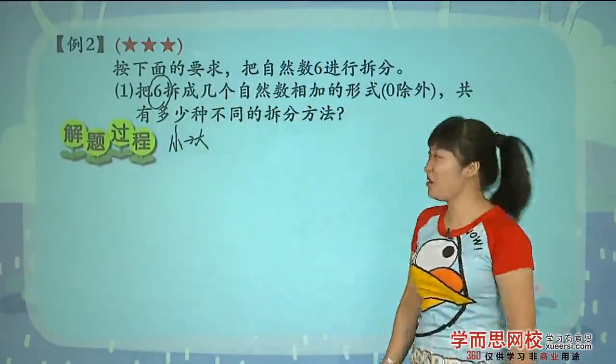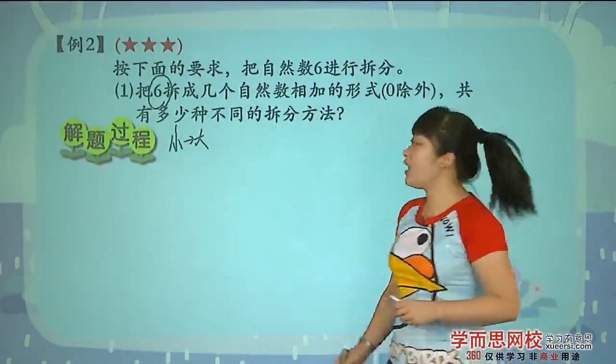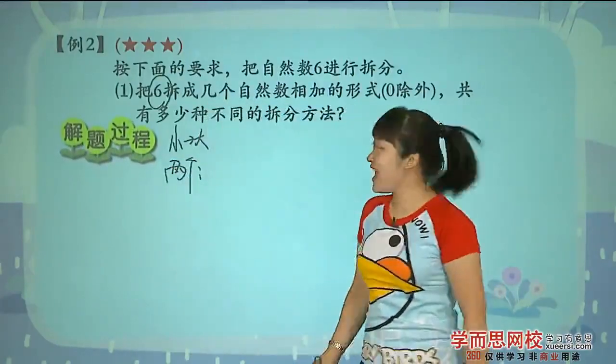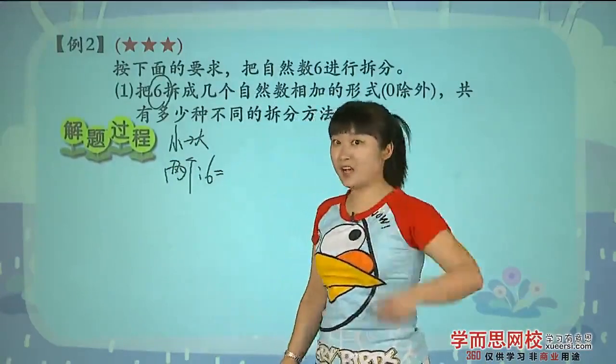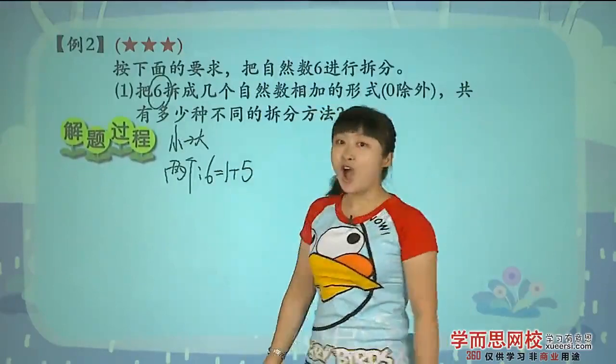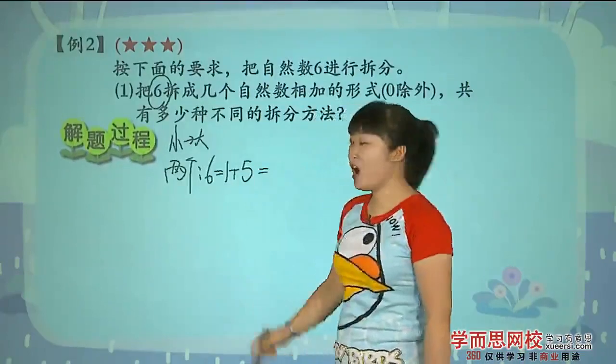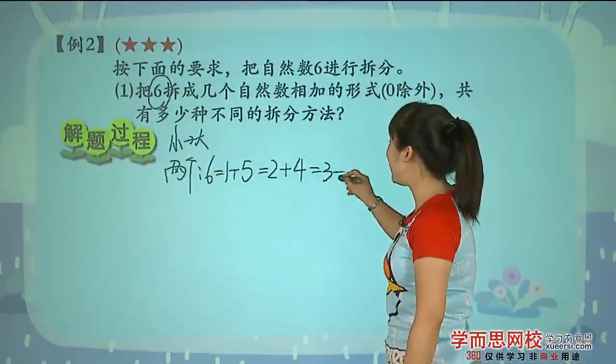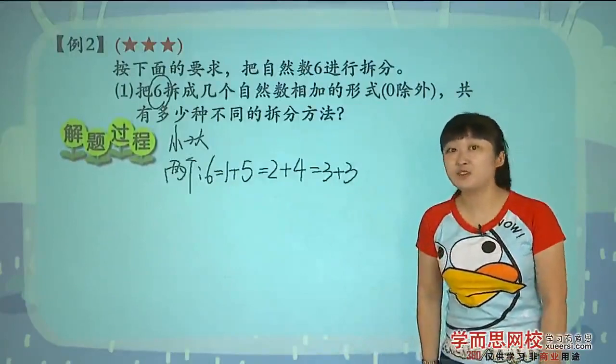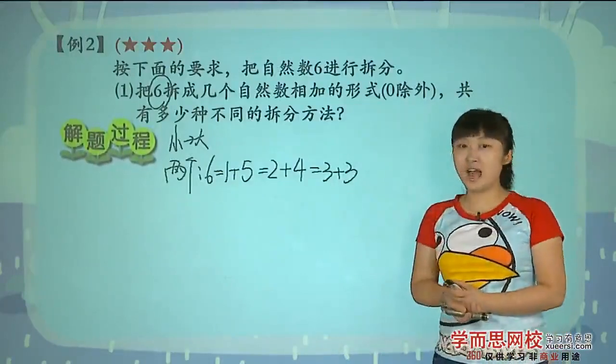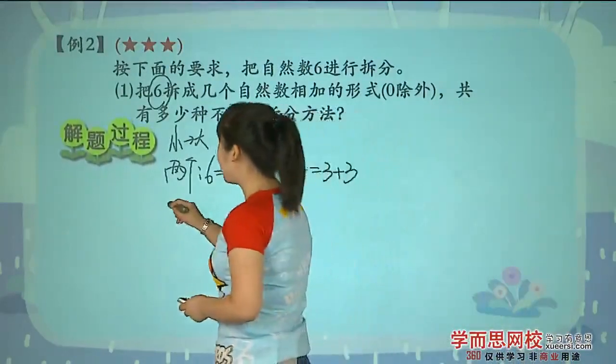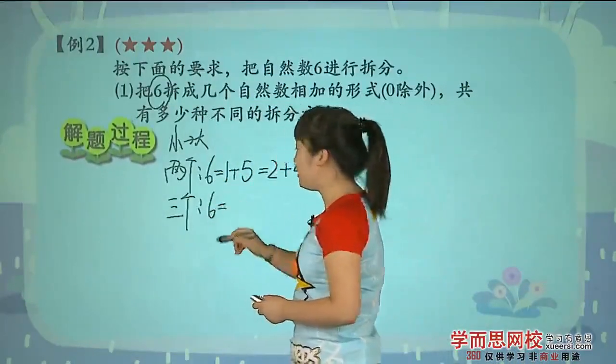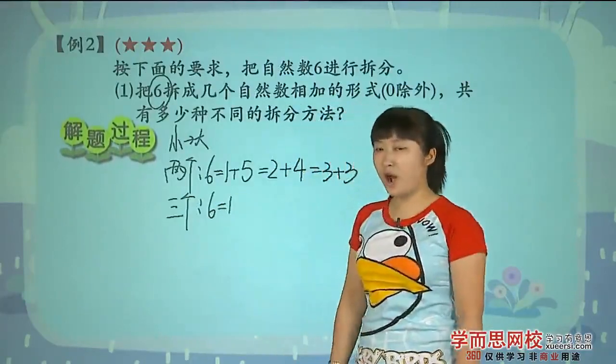先看第一小问。把六拆成两个数,我们可以采用由小到大的顺序。首先我们小朋友要先把类别分好,两个对吗。六等于一加五,再往下,六可以分成二加四,继续六可以分成三加三,允许有双胞胎出现。那现在这两个我们是不是就已经拆完了。